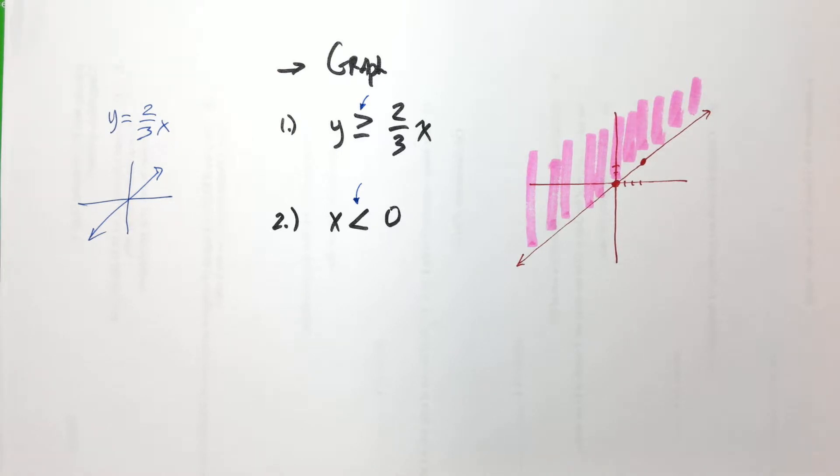But that's not why. Because we just did one a minute ago where it was greater than we shaded underneath. It depends where it's going, like where the slope is going. Oh. But why though? Why? Why do we shade?